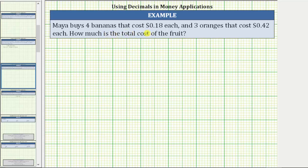Maya buys four bananas that cost 18 cents each and three oranges that cost 42 cents each. How much is the total cost of the fruit?